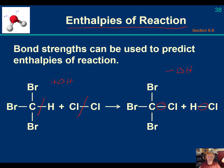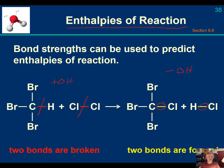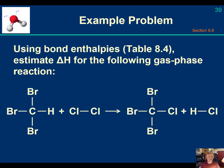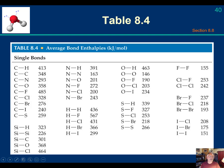Two bonds are broken and two bonds are formed — all we have to do is add those values together. We're going to break a carbon-hydrogen bond and a chlorine-chlorine bond, and we're going to make a carbon-chlorine bond and a hydrogen-chlorine bond. You'll be given tabulated data for the test. Breaking the carbon-hydrogen bond gives a positive delta H of 413 kJ/mol. Breaking the chlorine-chlorine bond gives a positive 242 kJ/mol.